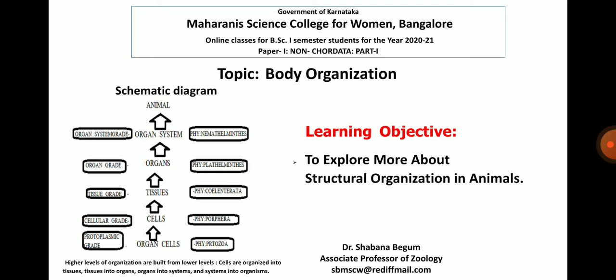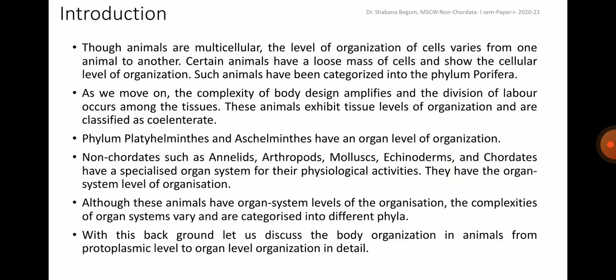Let us learn about the various types of body organizations in animals and the examples for each type. Though animals are multicellular, the level of organization of cells varies from one animal to another. Certain animals have a loose mass of cells and show the cellular level of organization. Such animals have been categorized into phylum Porifera. As we move on, the complexity of body design amplifies and division of labor occurs among the tissues. These animals exhibit tissue levels of organization and are classified as cnidarians.